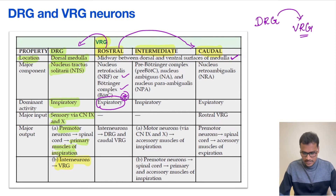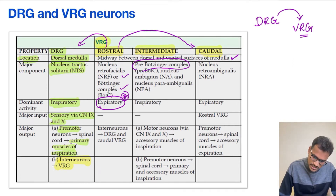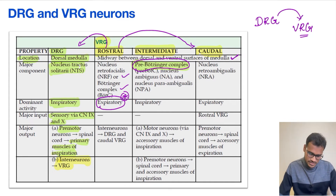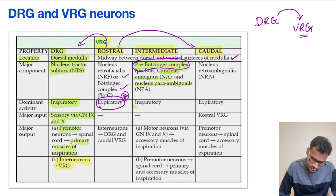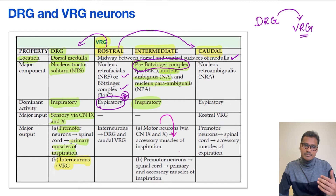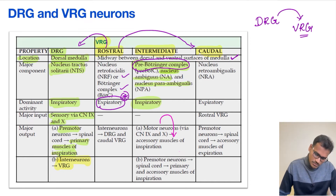Coming to the intermediate group — it contains the pre-Bötzinger complex, which is called the rhythm generator or pacemaker of respiration. However, it is not the only structure contributing to the generation of rhythm. The intermediate group also contains the nucleus ambiguus and nucleus paraambiguus. The overall function of this region is inspiratory control — it sends impulses via motor neurons to the accessory muscles of inspiration, helping with both primary and accessory muscles during exercise.